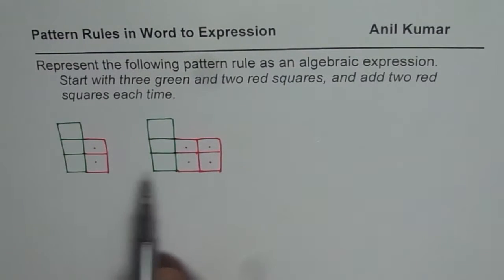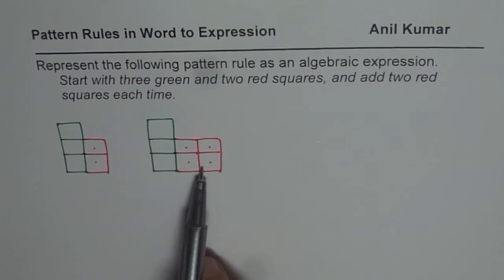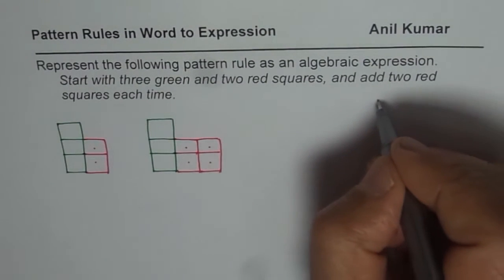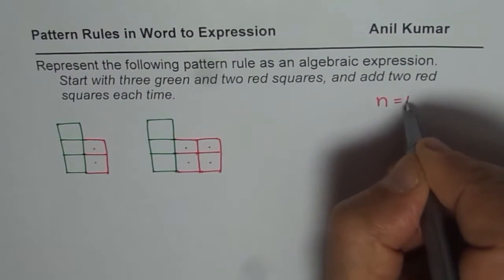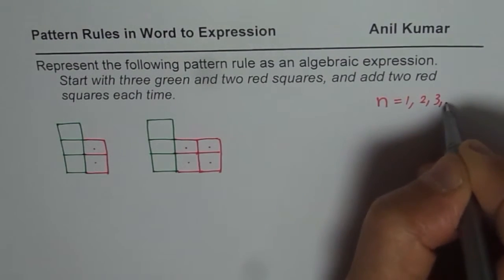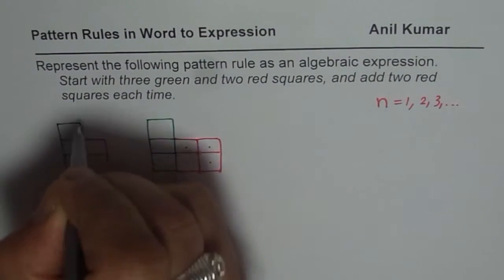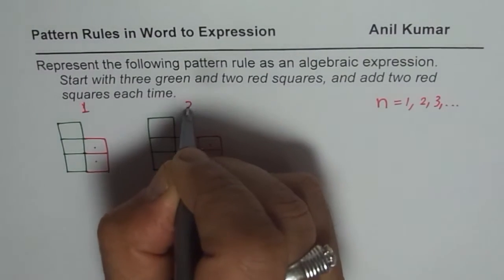The thing which changes is represented by a variable. Let us call that variable n. So n could be 1, 2, 3, and so on. Now, n is 1 here, and 2 there.